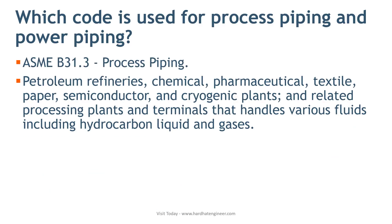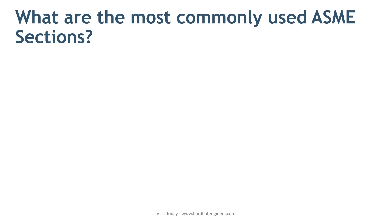ASME B31.3 process piping covers piping typically found in petroleum refineries, chemical, petrochemical, textile, paper, semiconductor, and cryogenic plants, and related process plants and terminals that handle various fluids including hydrocarbon liquids and gases.